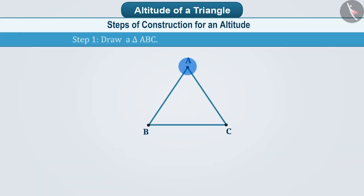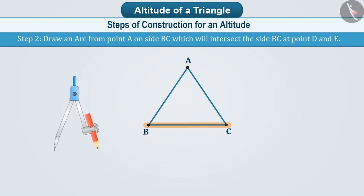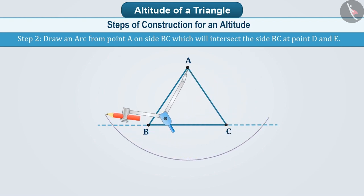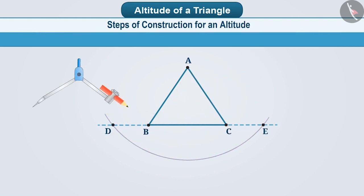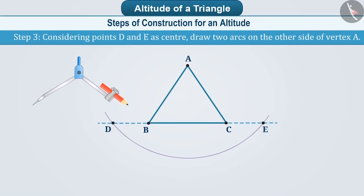Now let's learn the method of constructing altitudes. Step one: suppose we have to draw the altitude to side BC from vertex A in triangle ABC. Step two: for this, we will draw an arc from point A to side BC by taking a convenient radius in the compass, which will intersect side BC at points D and E. If necessary, you can extend the opposite arm from the vertex.